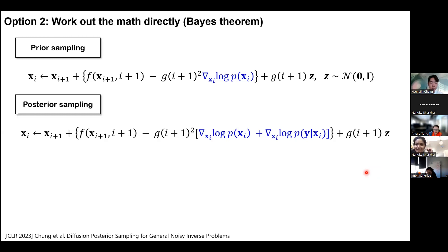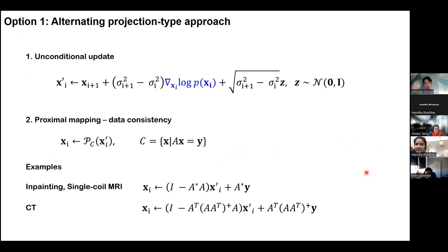Can I ask a quick question? In order to perform projections, the measurement has to be linear. Also, a disadvantage of projection-based methods is that you can't have measurements that are noisy — if you project into the subspace where the measurements are noisy, you're also going to get a noisy reconstruction. These two points — non-linearity and measurement noise — will be covered in a later topic on how we can extend to non-linear cases with some measurement noise.